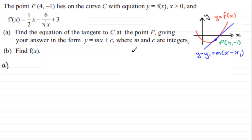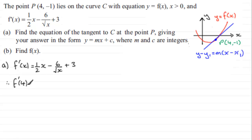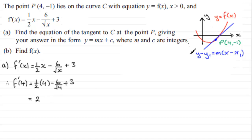Since f'(x) = (½x - 6) / √x + 3, we can say therefore f'(4) is going to be (½ of 4 minus 6) over the square root of 4, plus 3. Working this out: half of 4 is 2, then 6 divided by the square root of 4 which is 2 gives 3, so we've got 2 minus 3 which is minus 1, add 3 gives a gradient of 2.